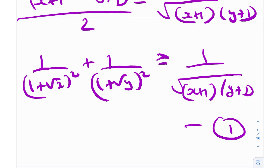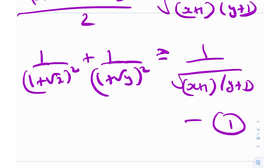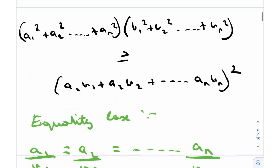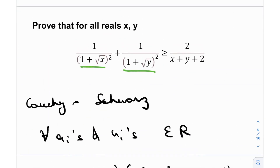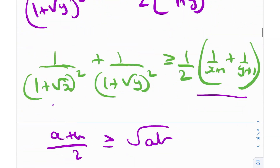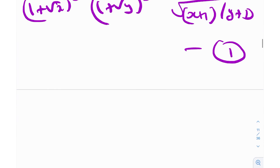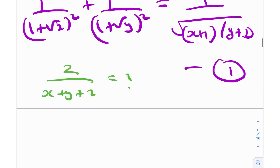We have 1/√((x+1)(y+1)) on the right-hand side, but our original goal is to find a form like 2/(x + y + 2) on the right-hand side. So how can we generate this form?